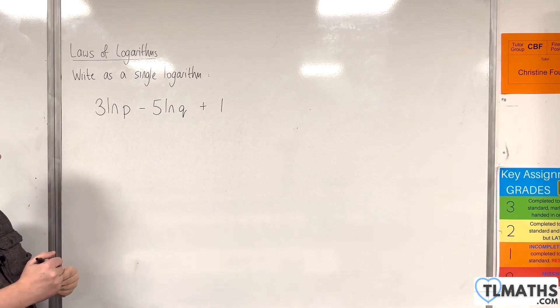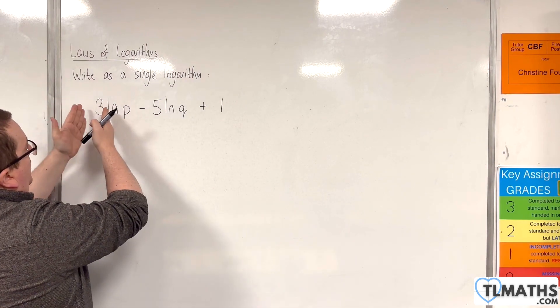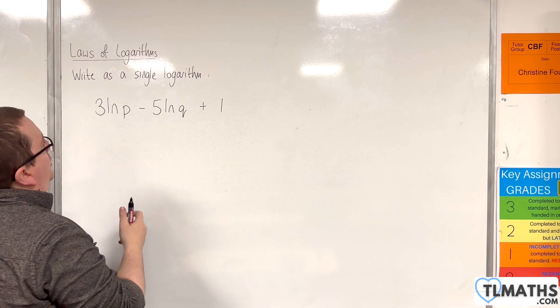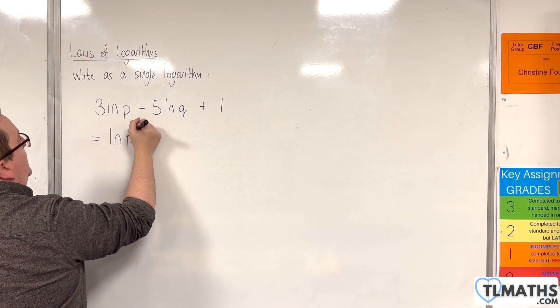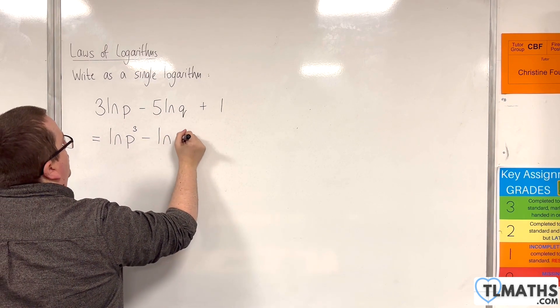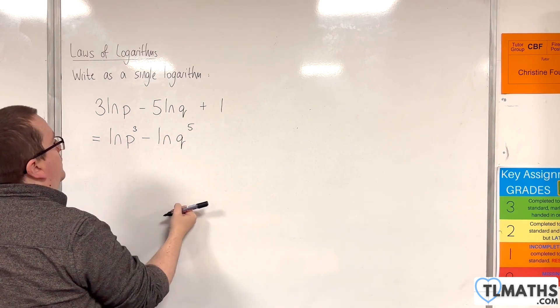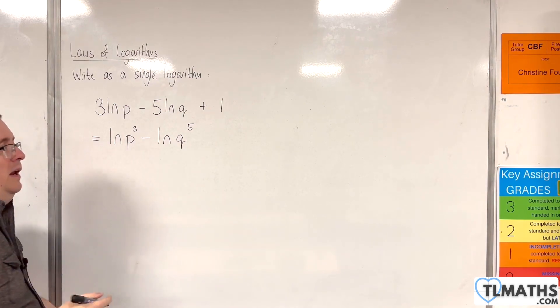So the first thing you want to do is bring those numbers up to the power. So use the power rule to write this as the natural log of p cubed, take away the natural log of q to the power of 5, and then we've got this plus 1.